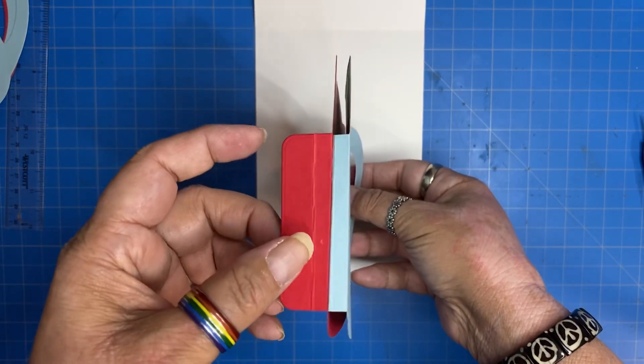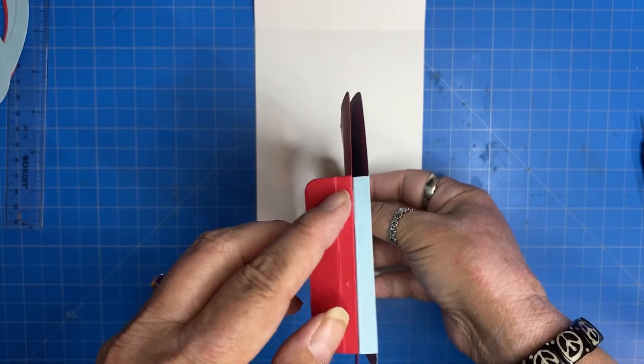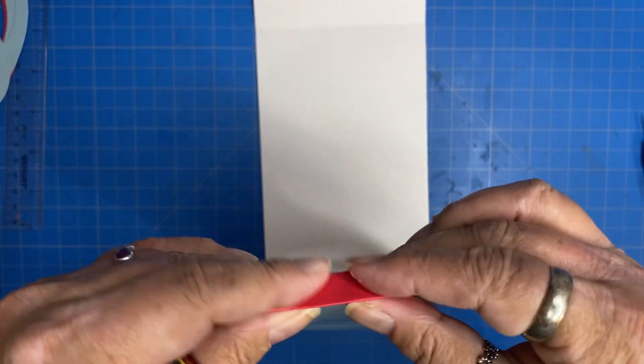So we are going to do the same thing. We're going to make this quarter-inch piece a gusset. So we're not going to glue it to anything. But this half-inch tab, we are going to glue to our next page.